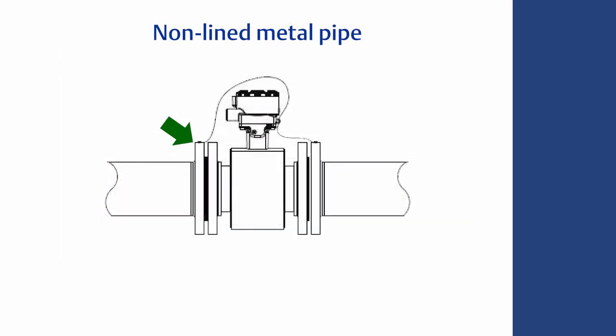Connect the meter grounding straps. For unlined metallic pipe, connect straps to pipe flange.